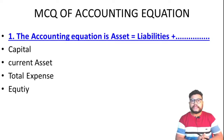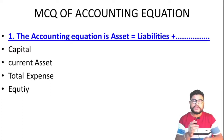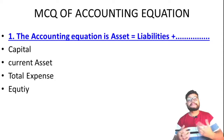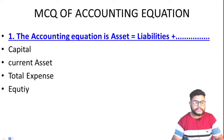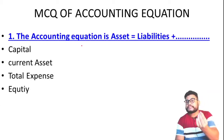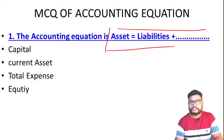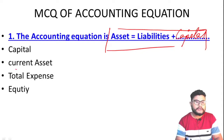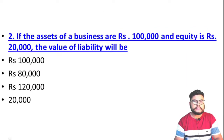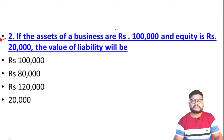For Term 1, Class 11, the exam will be MCQ-based, so I have brought MCQ questions for you. Let us start. The accounting equation is: Assets equal to Liabilities plus Capital. You have already learned that the accounting equation is Assets equal to Liabilities plus Capital — so our first option is correct.